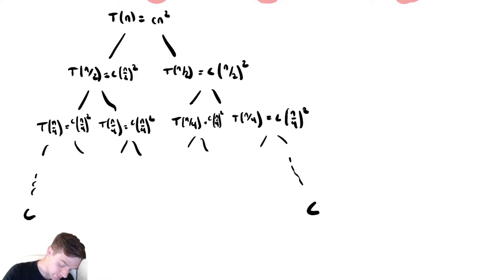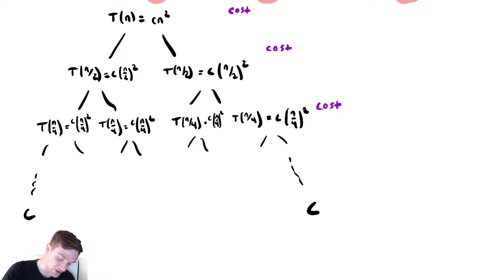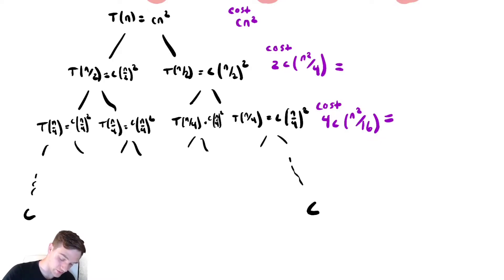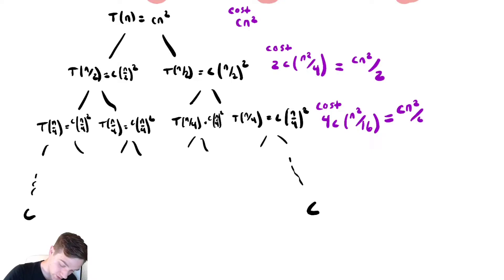Let's find the cost at each level. The cost of the first level is cn squared. The cost of the next level: we have two copies of cn squared over 4. For the next we have four copies of cn squared over 16. Let's do some simplification. The first level is cn squared, the second is cn squared over 2, and the third is cn squared over 4.